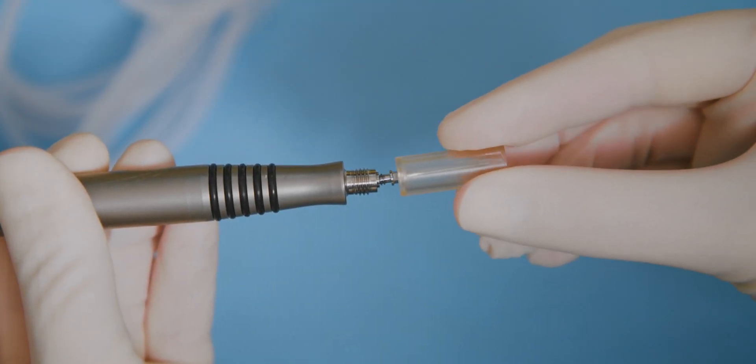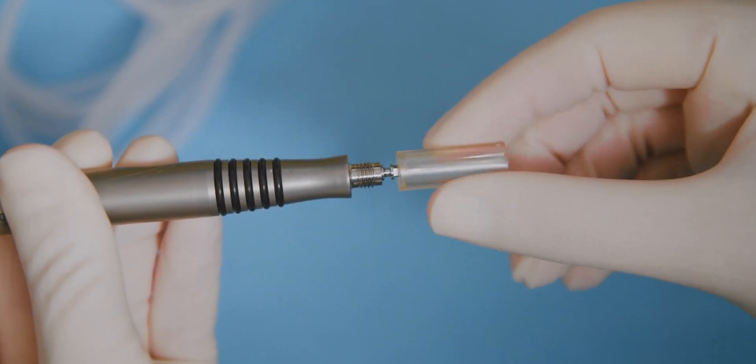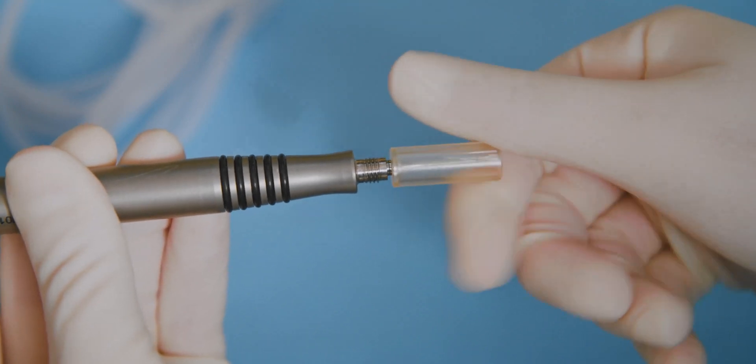Connect the easy phaco tip to the handpiece. Turn the tip gently in a clockwise direction until it locks into position.